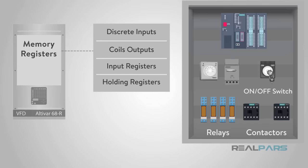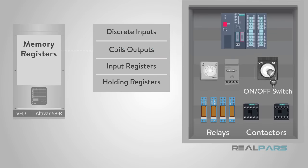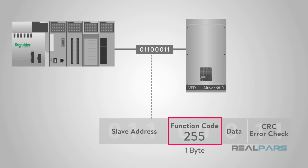Many of the data types are named from their use in driving relays. For example, a single-bit physical output is called a coil, and a single-bit physical input is called a discrete input or a contact. The function code field of the message contains one byte that tells the slave what kind of action to take. Valid function codes range from 1 to 255, but not all codes will apply to a particular slave.